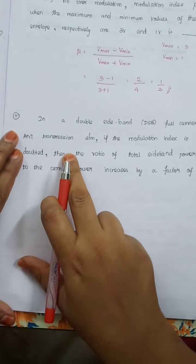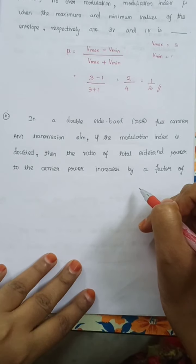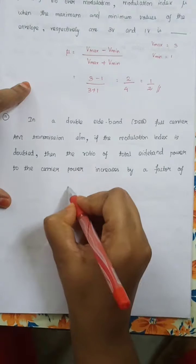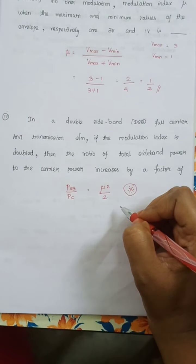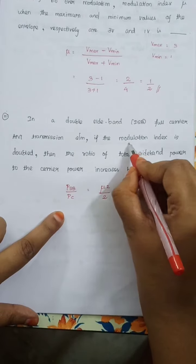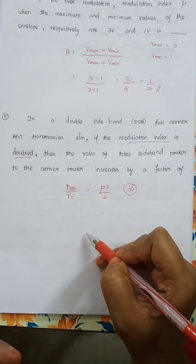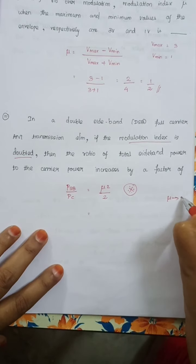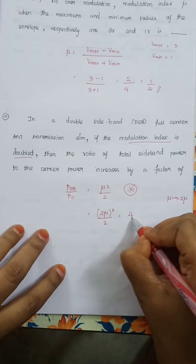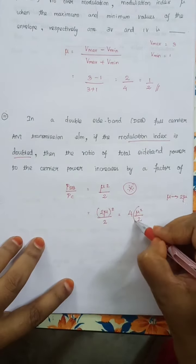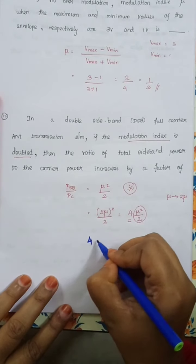Question 11: In a double sideband full carrier AM transmission system, if the modulation index is doubled, then the ratio of total sideband power to carrier power increases by what factor? The ratio of total sideband power to carrier power equals mu²/2. If mu is doubled to 2mu, we get (2mu)²/2 = 4·mu²/2. So it increases by a factor of 4.